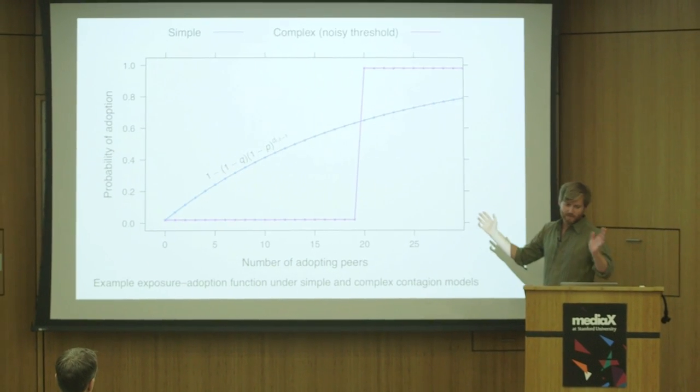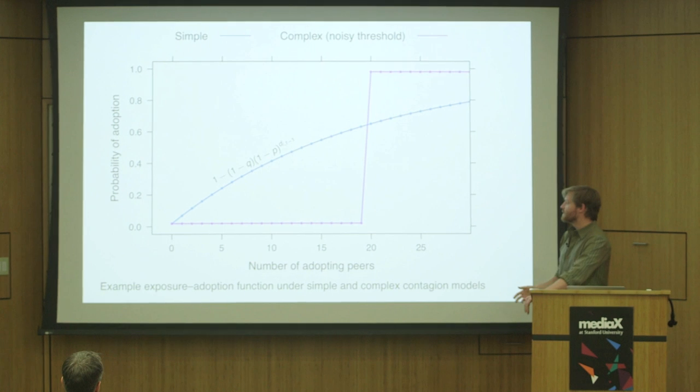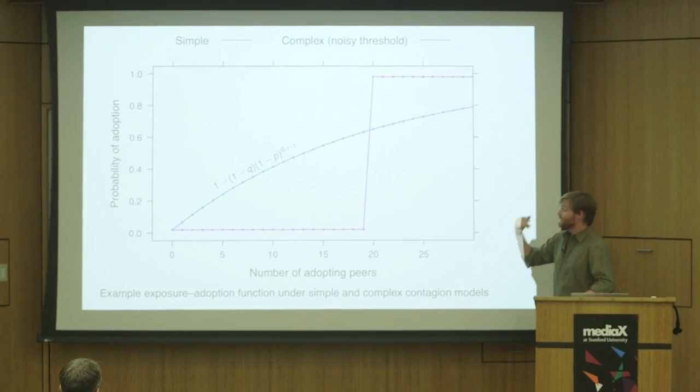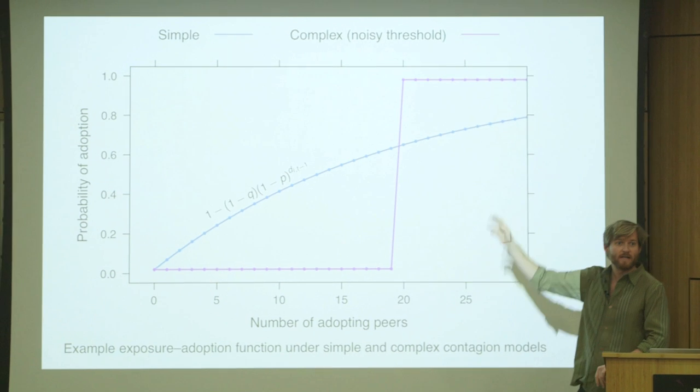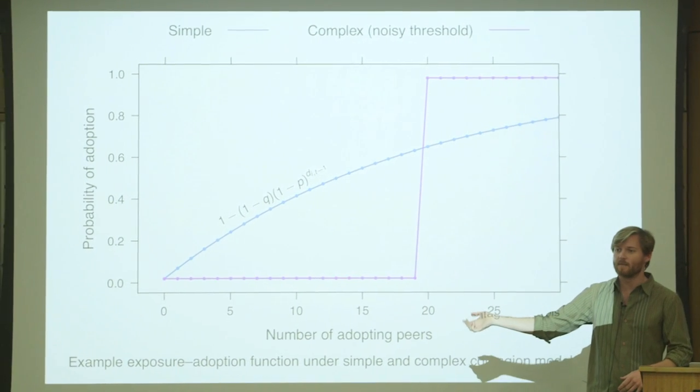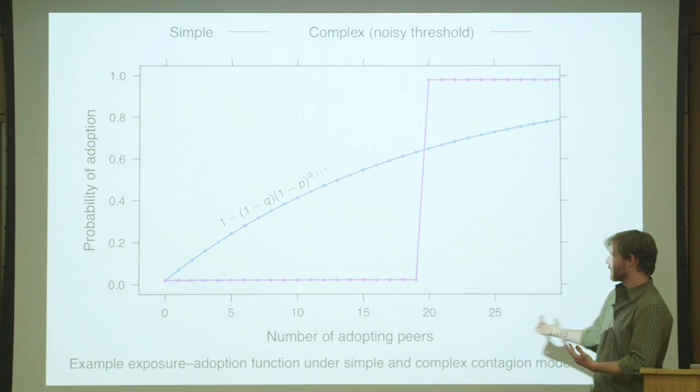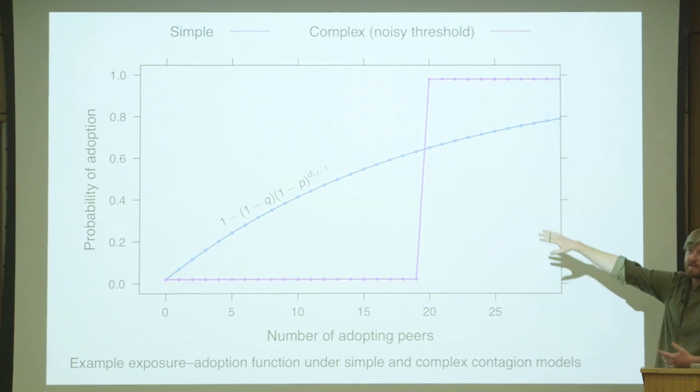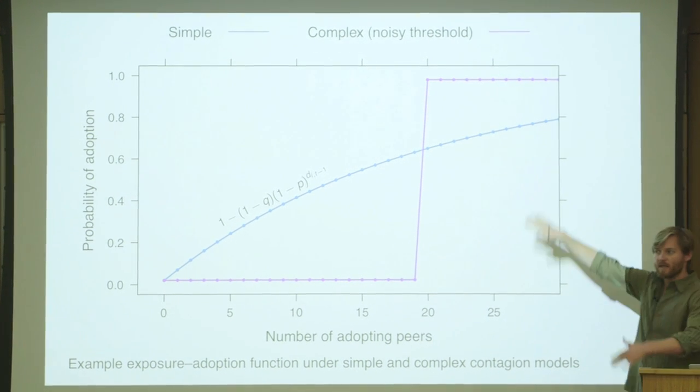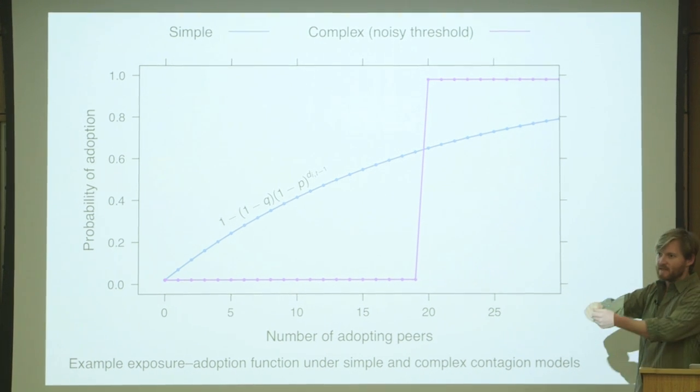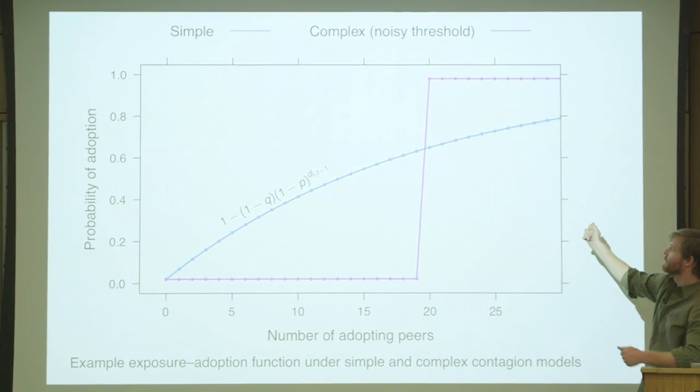The social sciences and epidemiology tell us lots of things about what this function could look like. If you have a simple contagion model where each of your infected friends has an independent probability of infecting you—this is how a lot of contagious diseases work—then you get this blue simple contagion line. It's always sublinear, so additional infected friends give you the same or less increment in the probability of you being infected.